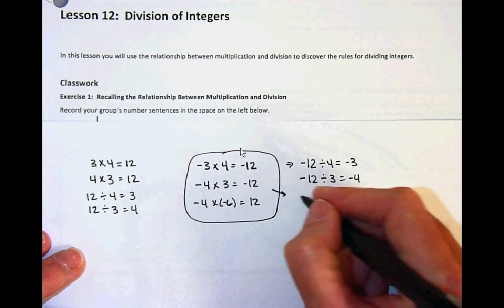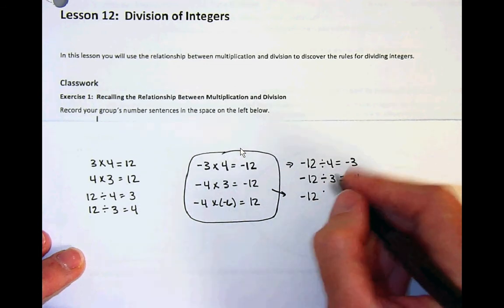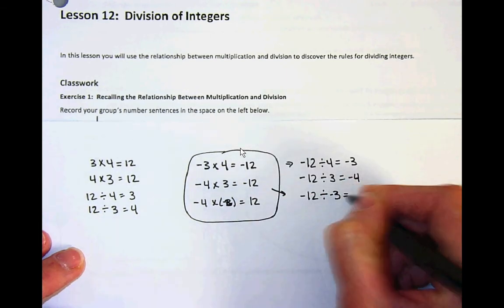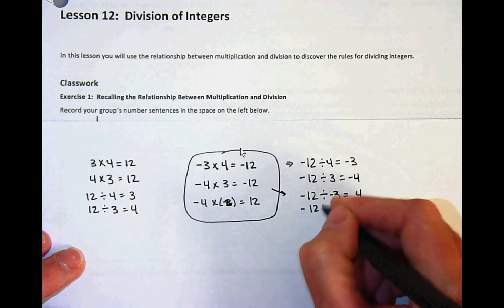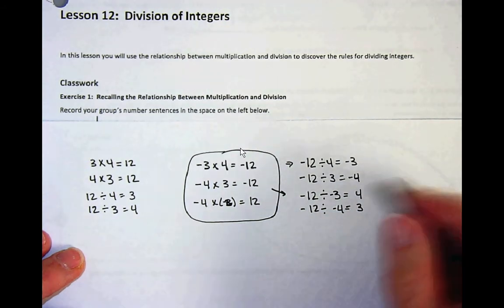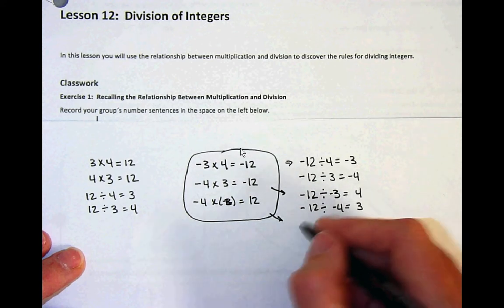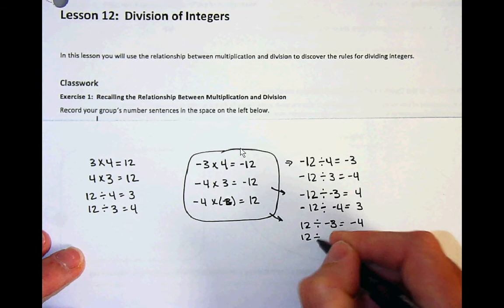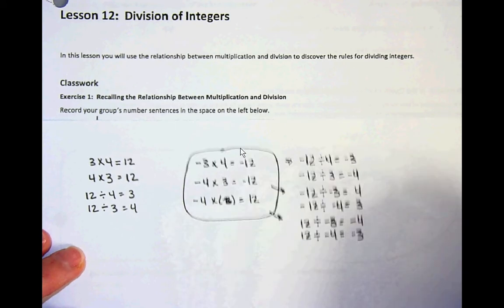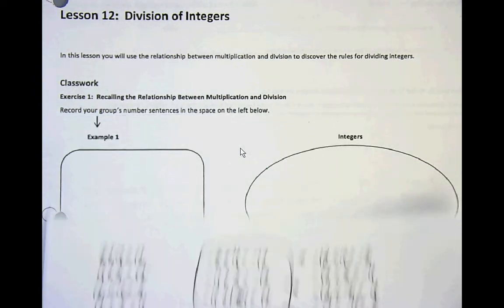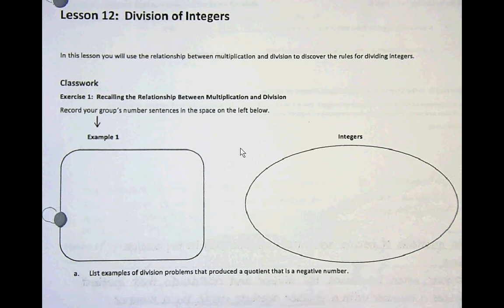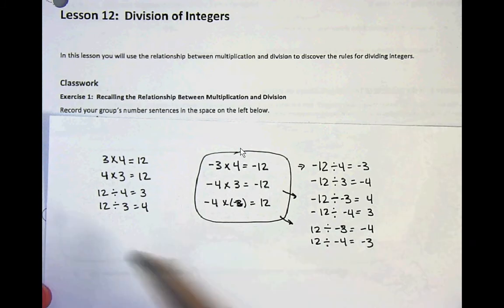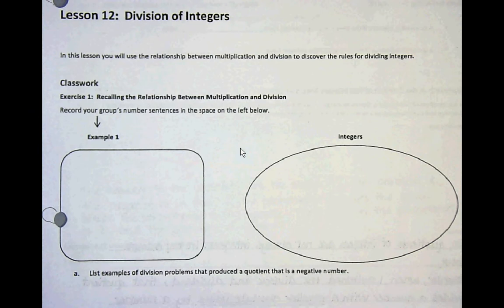And negative 12 divided by 3 is negative 4. This one right here would be negative 12 divided by negative 3 — oops, I actually put the wrong one here — negative 3 would be positive 4. And negative 12 divided by negative 4 is positive 3. And then for this last one, 12 divided by negative 3 is negative 4, and 12 divided by negative 4 is negative 3. So when I ask you to fill in example 1 and the corresponding integers, remember to fill it in like this. Pick your own — don't use mine. Come up with a fact family that you can complete this step with. When you're done, go ahead and continue the video.